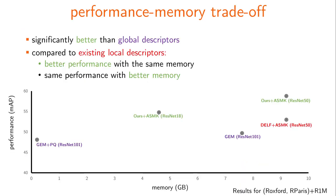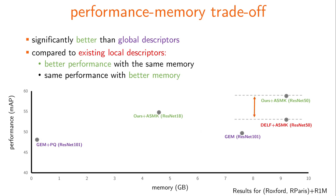We show the trade-off between performance and memory at large scale. Compact global descriptors perform poorly, while all our descriptors compared to existing ones perform better for the same memory and perform the same for less memory.